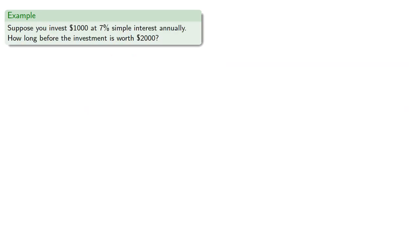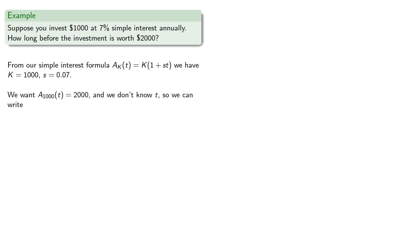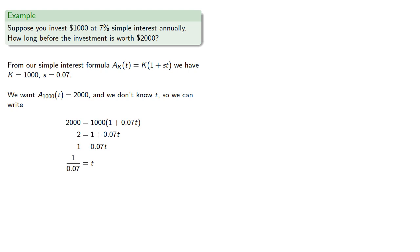Another quantity in the simple interest formula we could solve for is the amount of time. Suppose you invest $1,000 at 7% simple interest annually — how long before the investment is worth $2,000? From our formula A(t) = K(1 + st), the principal is $1,000, the interest rate is 0.07, and we want A(t) = 2,000. Keeping all calculations until the end, we find t is approximately 14.29 years.